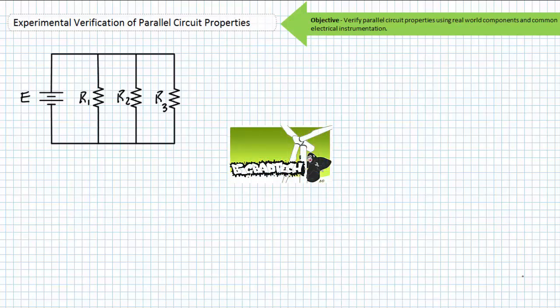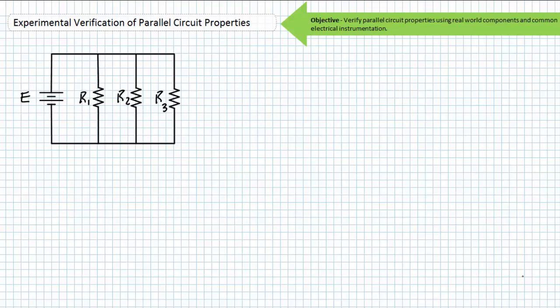This activity will tie together a number of topics including basic parallel circuit properties, Kirchhoff's current law, and the current divider rule, in addition to all the prerequisites from the previous experimental verification of Ohm's law and experimental verification of series circuits lectures. If you've been following this playlist in its intended sequence or are already familiar with these topics, no worries. If not, I recommend hitting these prerequisite lectures at the Big Bad Tech channel. This activity is especially exciting because it represents the synthesis of a number of topics and presents yet another opportunity to demonstrate that these properties are real, verifiable, and extremely useful tools.